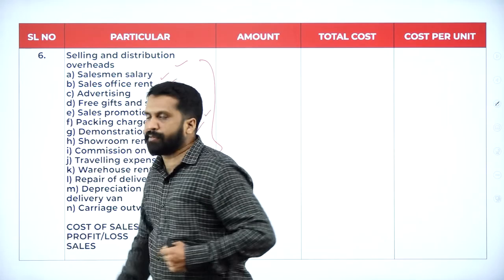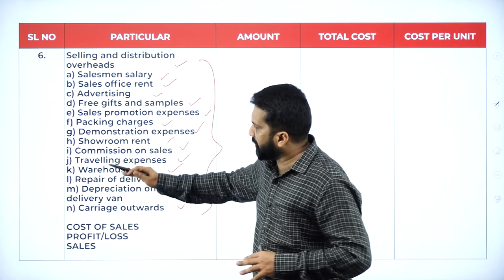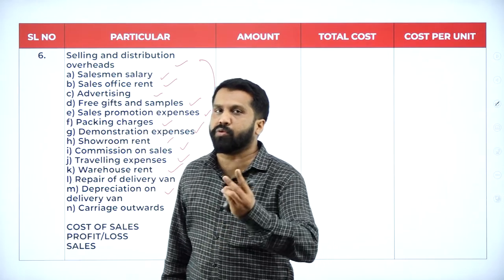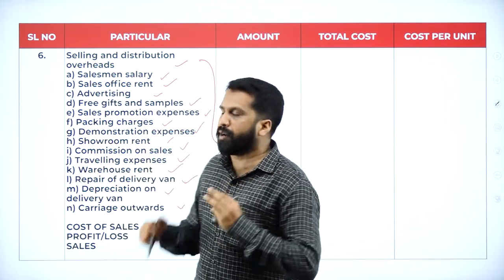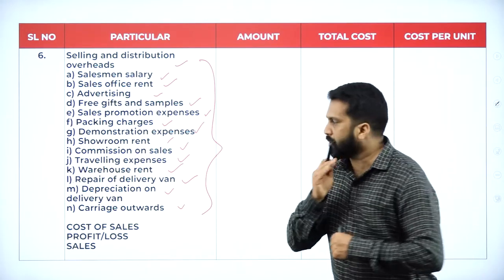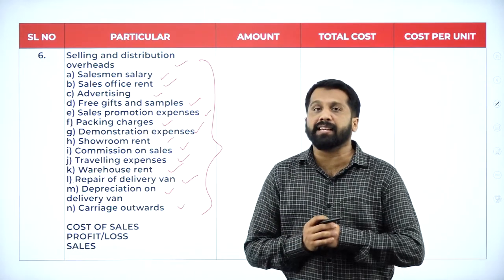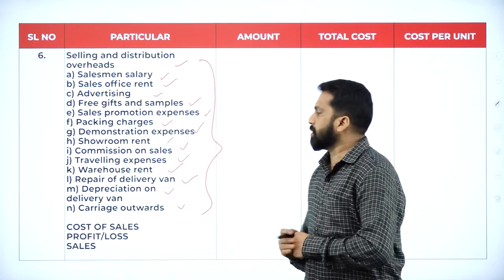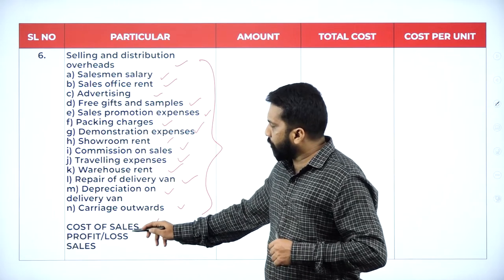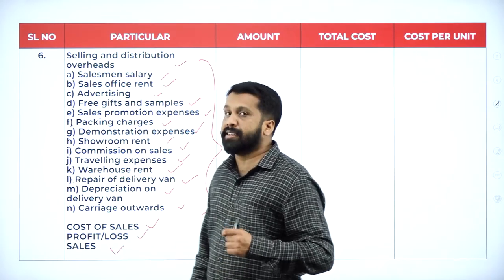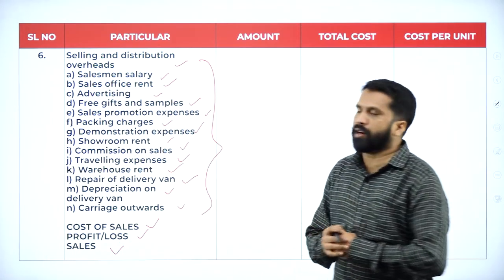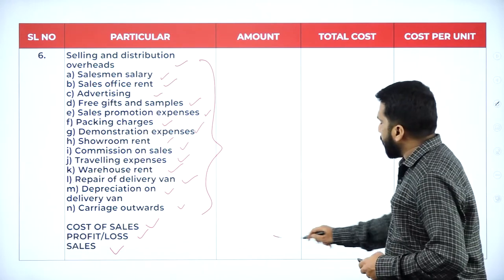There are about 14 items — nothing to worry, be familiar with these things, no need to mug up. Out of 14 or 15, in the question they may ask you any two or three expenses only. You should remember which comes under selling and distribution. If you add all selling and distribution expenses to cost of goods sold, you get cost of sales. Add profit — if loss, minus — your final answer is sales.